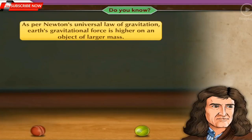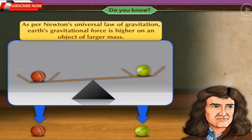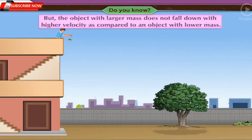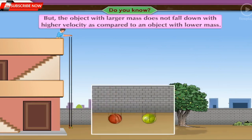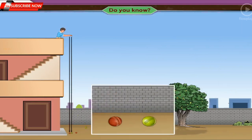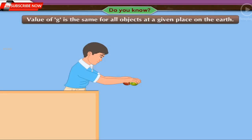As per Newton's universal law of gravitation, earth's gravitational force is higher on an object of larger mass. But the object with larger mass does not fall down with higher velocity as compared to an object with lower mass. It is because the value of g is the same for all objects at a given place on the earth.